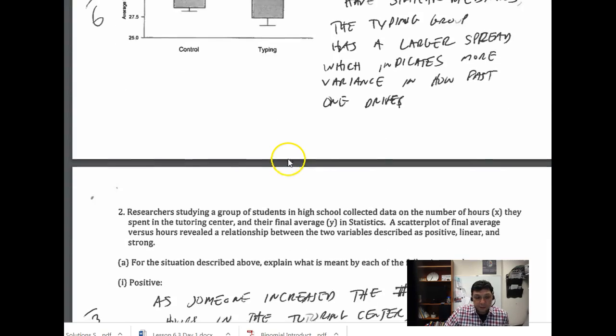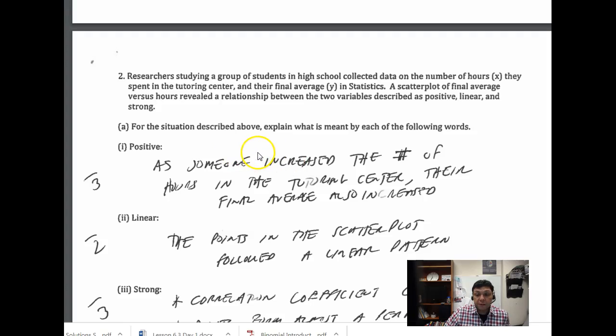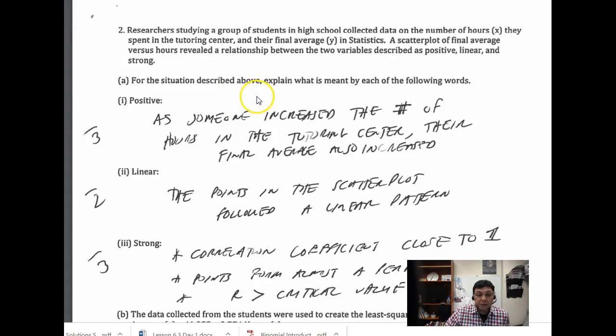On the next question here, we're talking about regression. Here you didn't have to run it, you just use this language here. In this case we're looking at the specific situation of how many hours in the tutoring center and your final average in statistics. If that's positive, that means as one variable increases, the other increases. In this case, as your hours increase in the student center, your final average will increase also.